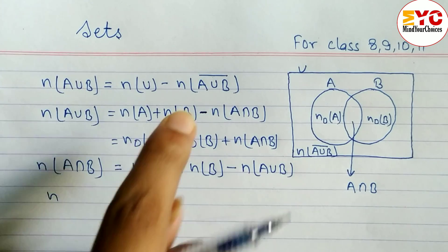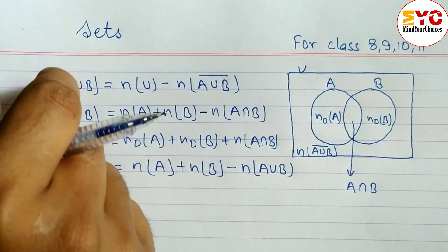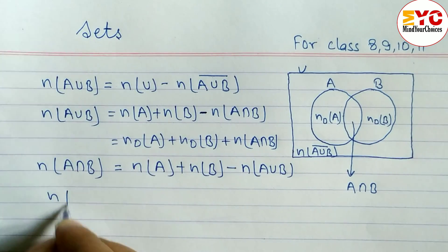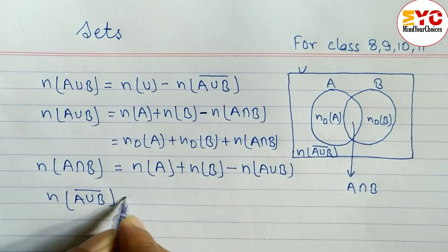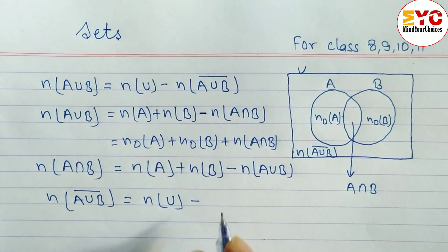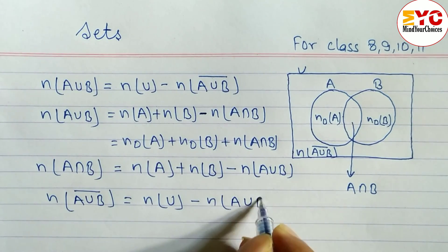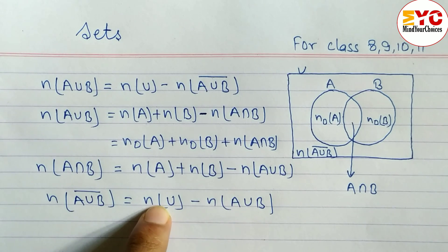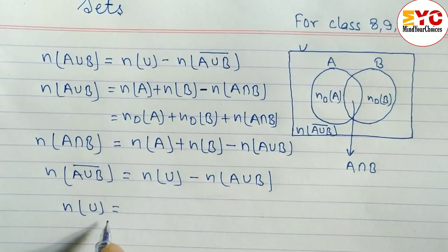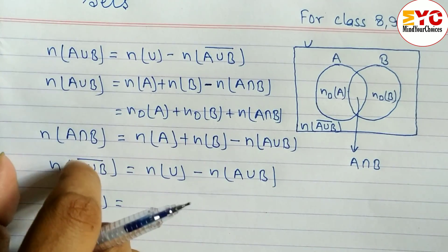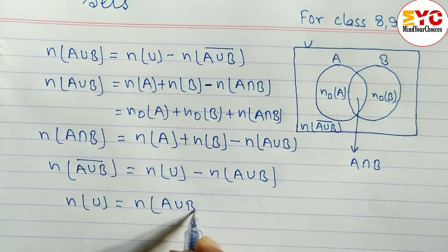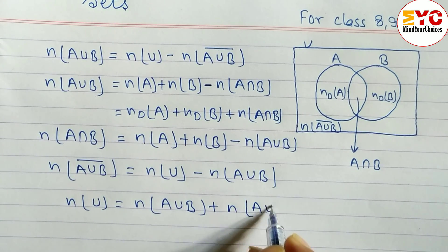Similarly, to find n(A∪B complement), take the other terms to the right side: n(A∪B complement) = n(U) minus n(A∪B). To find n(U), rearrange again: n(U) = n(A∪B) plus n(A∪B complement). When you move a term across the equation, the sign changes from minus to plus.